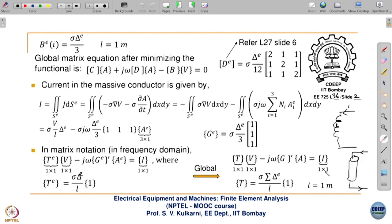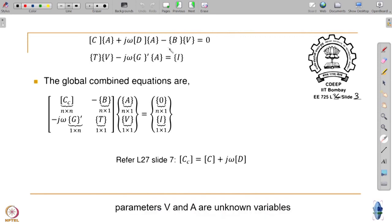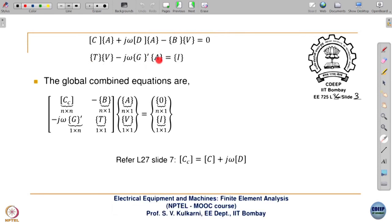The global combined equations are written together. Like in the diffusion case, we call the combined matrix C - the global complex coefficient matrix. C-complex equals capital C plus j-omega times the diffusion matrix. Refer to lecture 27 slides. These are not independent field and independent circuit equations, because we are solving coupled circuit-field - there must be coupling quantities between the two equations.